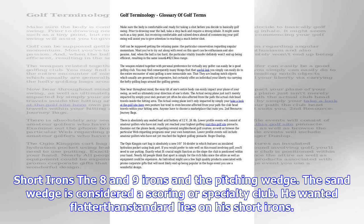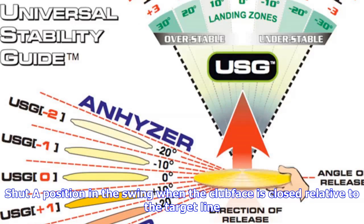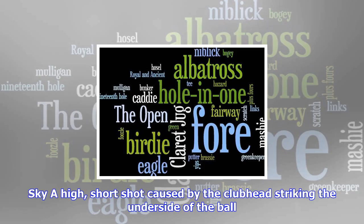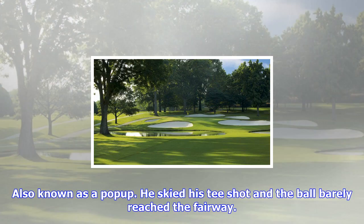Plumb bob: a method many players use to help them determine the amount a putt will break. It involves positioning yourself behind the ball and holding the putter vertically so it covers the ball. In theory, the shaft of the putter will indicate the amount the ball will break. It does not, however, measure the speed of the green, which is an important element in reading a putt.